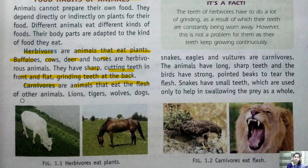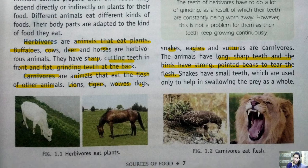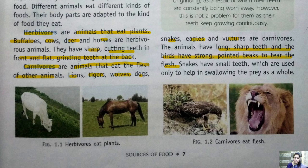Carnivores are flesh-eating or meat-eating animals. Animals that eat other animals are called carnivores — examples are lions, tigers, wolves, snakes, eagles, and vultures. Dogs are generally considered omnivores as they can eat both plants and animals. Carnivores have long and sharp teeth to tear flesh and meat, since meat is hard to eat.